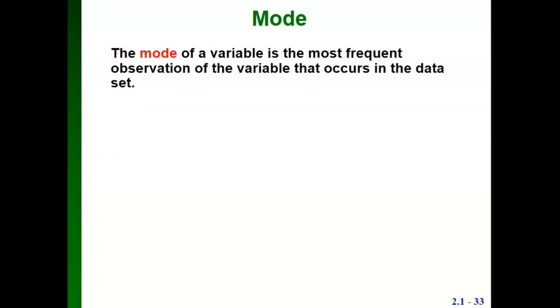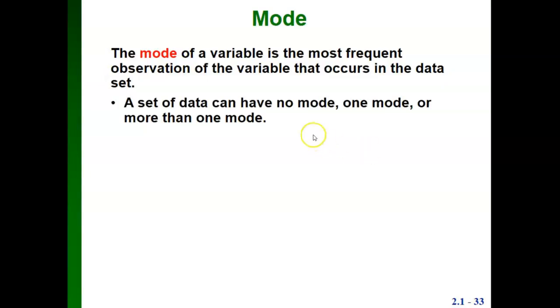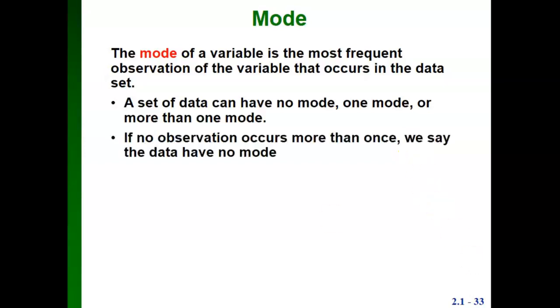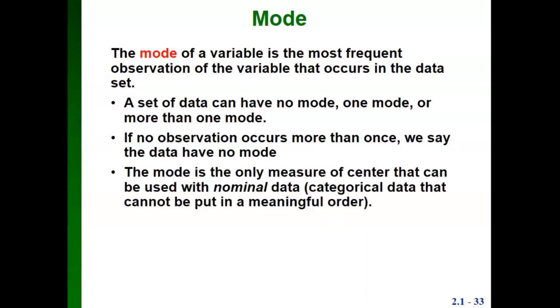Another measure of center is called the mode. The mode is the most frequent observation that occurs in the data set. A set of data can have no mode if no value occurs more than once, one mode, or even more than one mode if two values occur the same number of times. If no observation occurs more than once, the data has no mode. The mode is the only measure of center that we can use with nominal data, which is categorical or qualitative data that we can't put into a meaningful order.